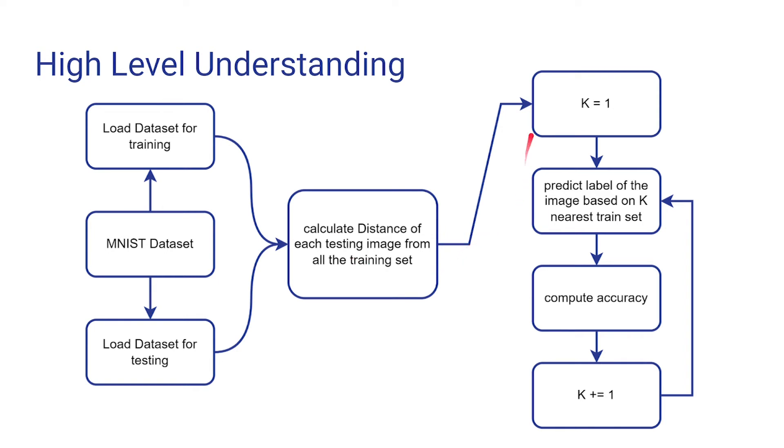Now, for each value of K starting at 1, we predict the digit based on the digit majority of the K nearest training images. Then we find the accuracy of KNN for each value of K.